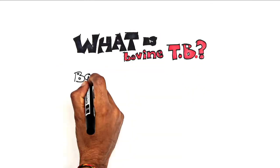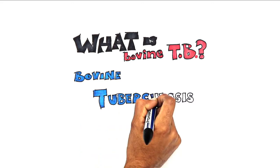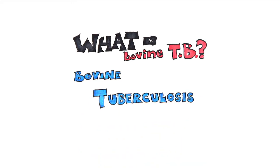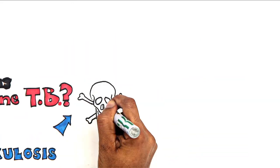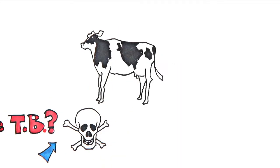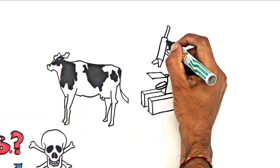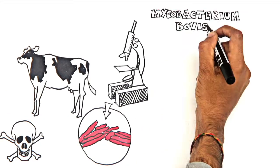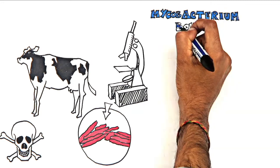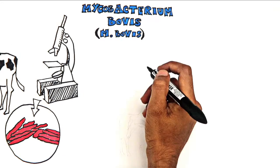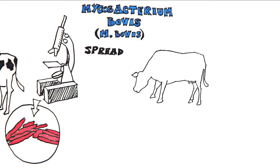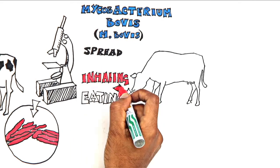What is bovine TB? Bovine tuberculosis, also known as bovine TB or BTB, is a potentially fatal infectious disease of cattle caused by bacteria called Mycobacterium bovis, or M. bovis. Bovine TB is spread by inhaling or eating the M. bovis bacteria.